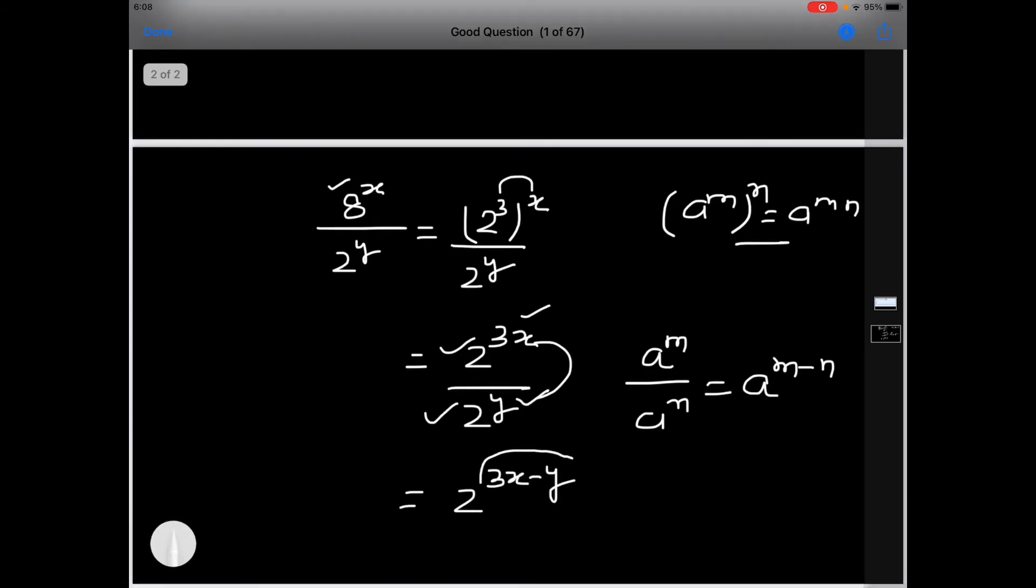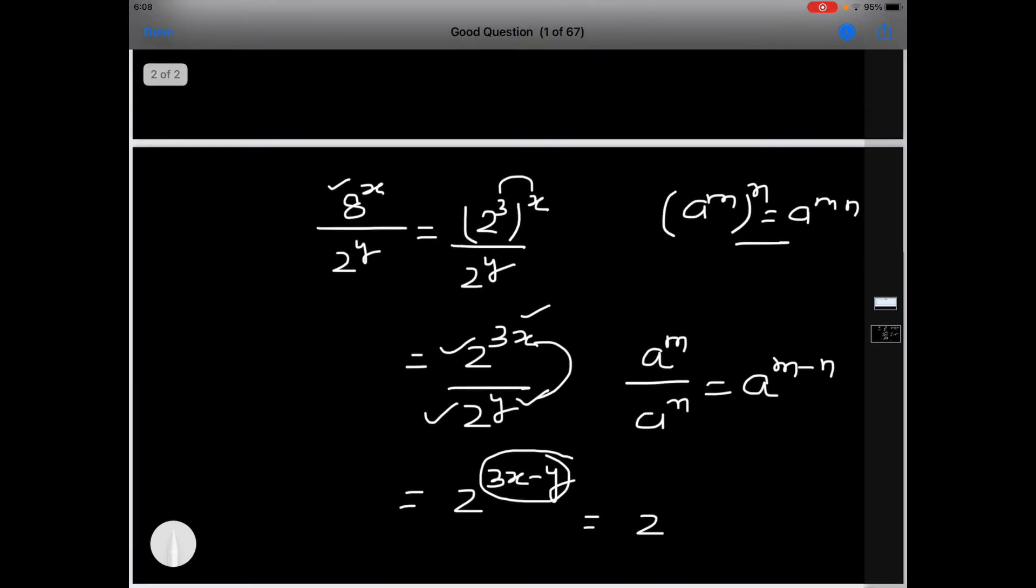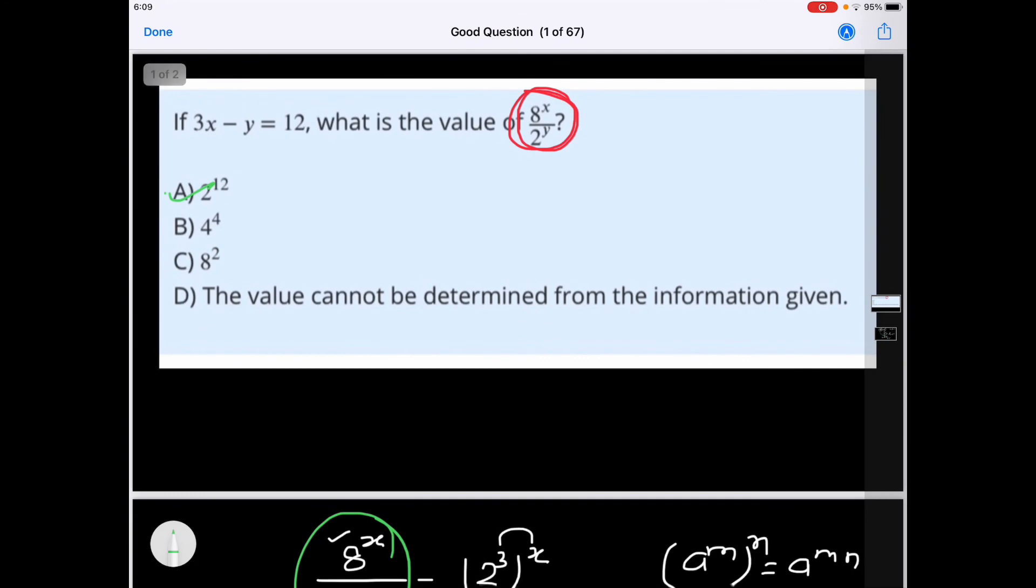And value of 3x minus y is given which is equal to 12. So it is equal to 2 raised to the power of 12. So value of this expression is equal to 2 raised to the power of 12. Option A is correct.